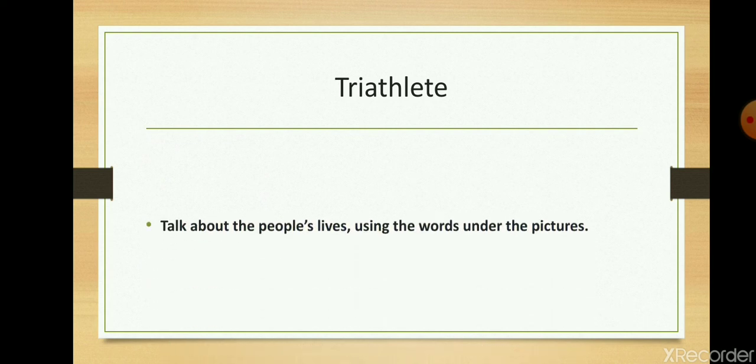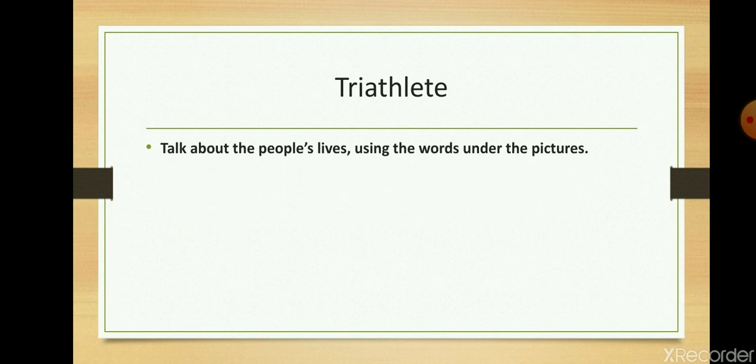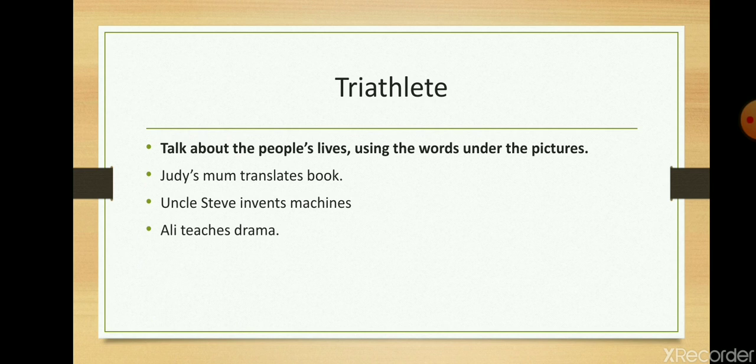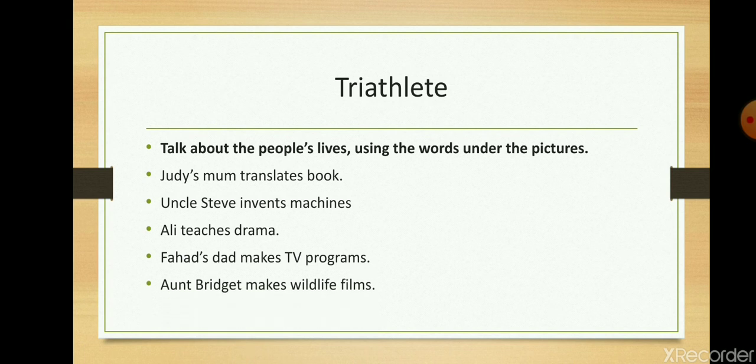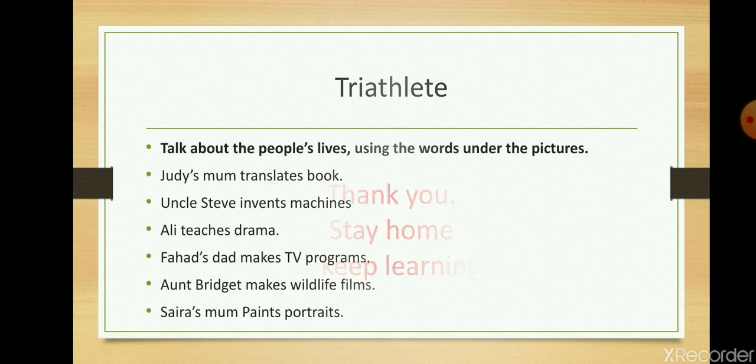Next topic is talk about the people's lives. We are talking about the people's lives using the words under the picture. First one is Judy's mom translates books, Uncle Steve invents machines, Ali teaches drama, Fahad's dad makes TV programs, Ann Bridget makes wildlife films, Cyrus's mom paints portraits.